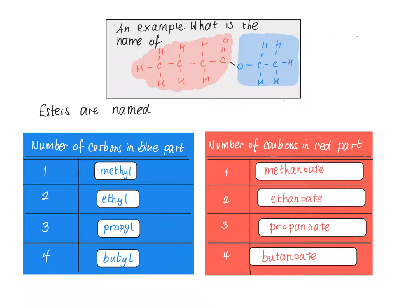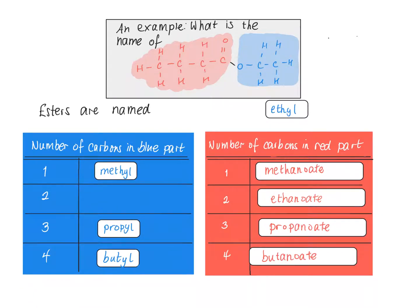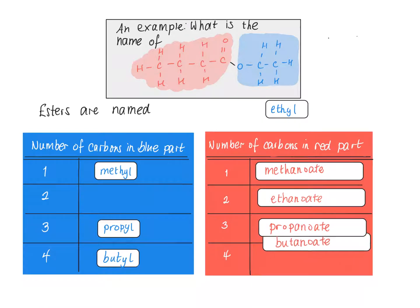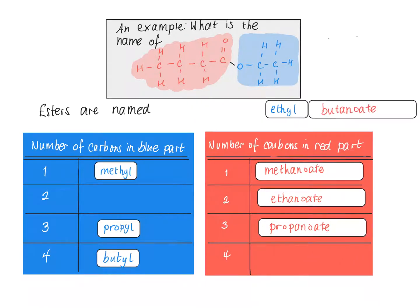To name an ester, we do the blue bit first, then we do the red bit. The blue bit has got one, two carbons in. When it's got two carbons derived from an alcohol, we start with ethyl. Then we look at the red bit, and the red bit has got one, two, three, four carbons. When there are four carbons in the red bit derived from the carboxylic acid, it ends in butanoate. So the name of this ester is ethyl butanoate.